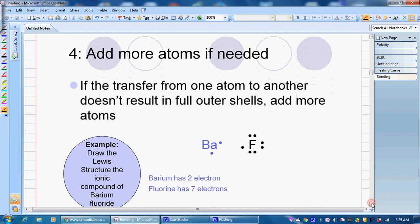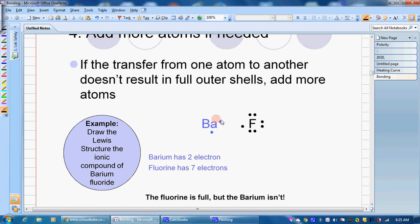Another example here is barium and fluorine. Barium has 2 electrons to lose. Fluorine can accept the 1, but then its valence shell is full. So barium still needs to get rid of an electron.